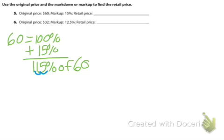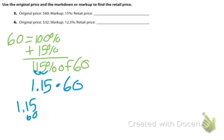So 115% as a decimal is 1.15, and of means multiplication, so 1.15 times 60.